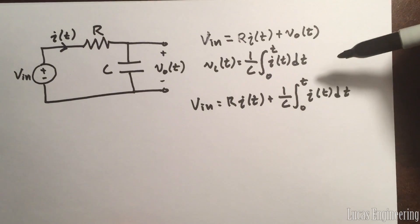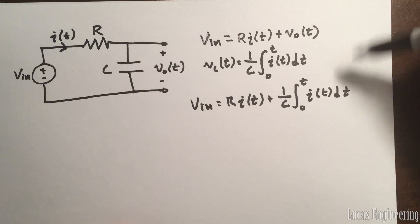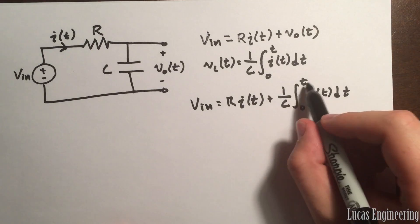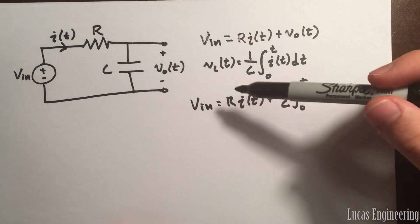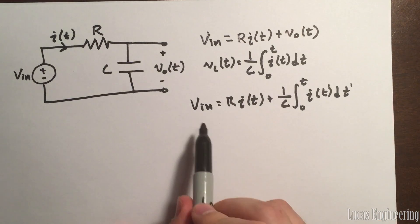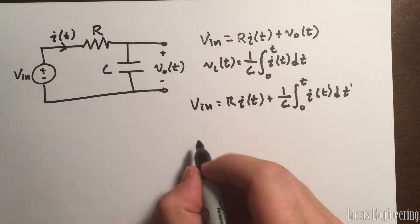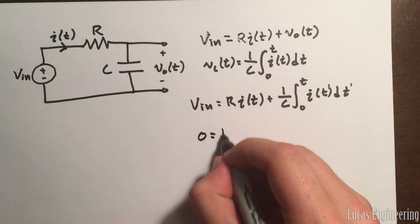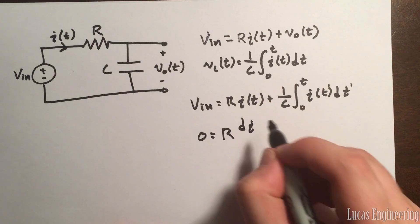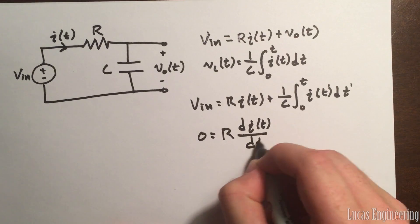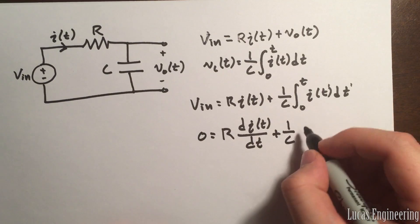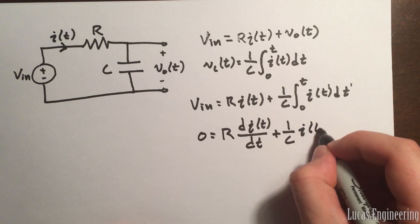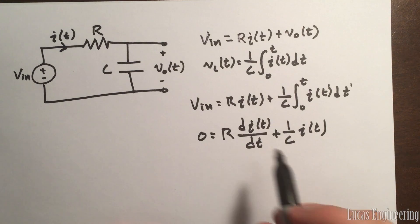It's common to change the integration variable to T-prime since we have T in the limits, just to make the mathematics clean. Now let's differentiate both sides with respect to T. Since V_n is a constant, its derivative is zero, giving: 0 = R·(dI/dT) + (1/C)·I(T).